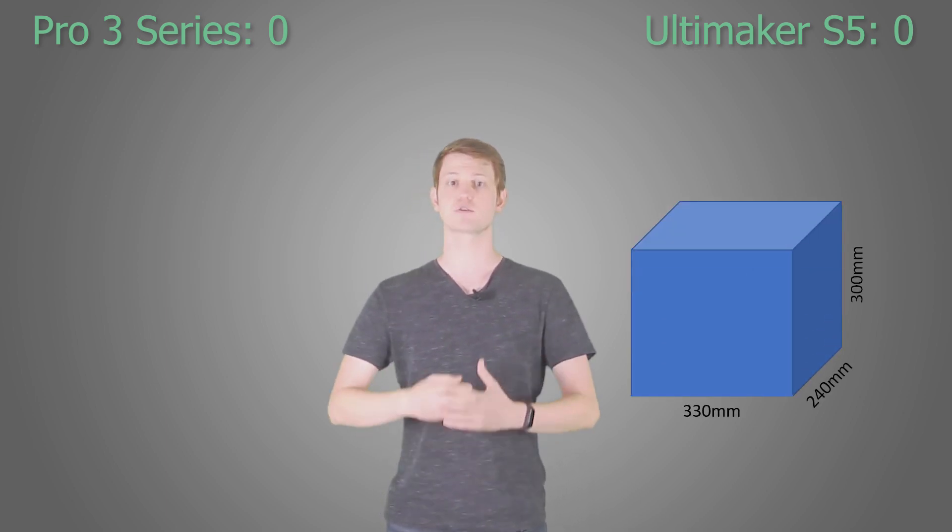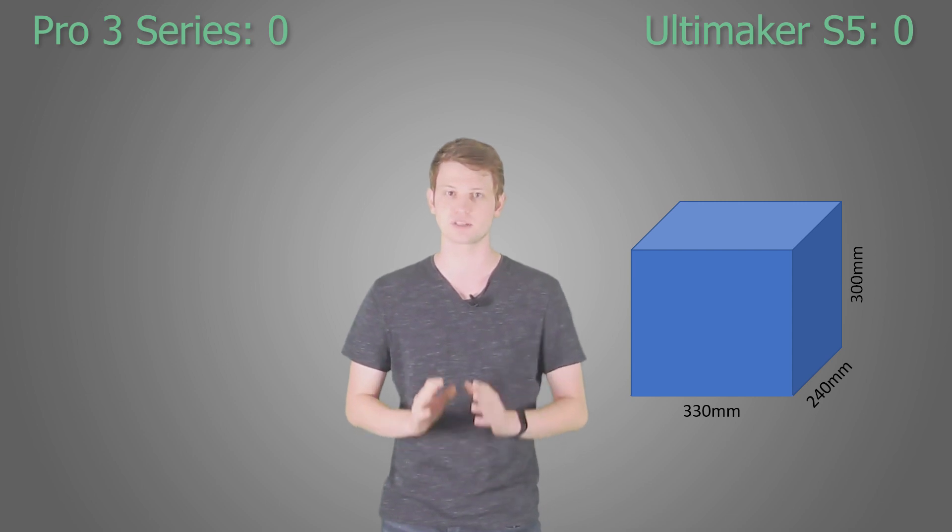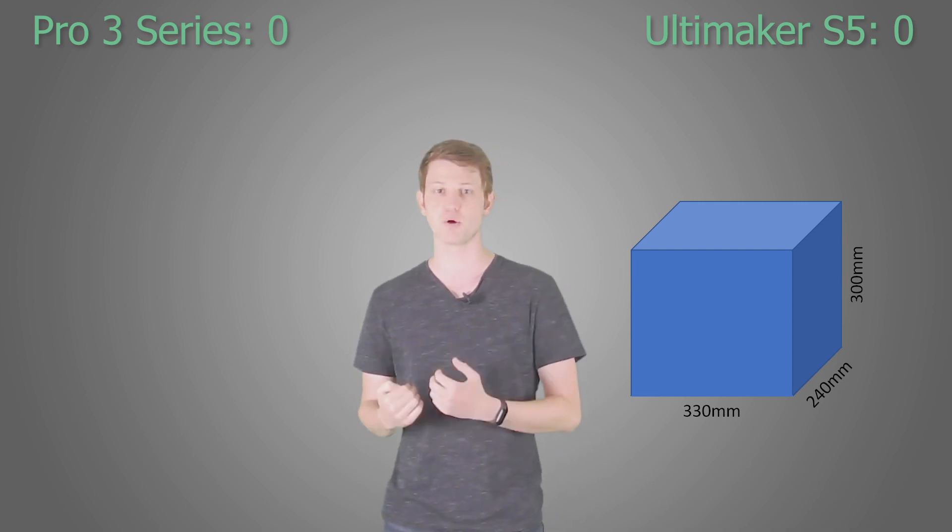The first thing many people look at when deciding which new 3D printer they want to buy is the build area or build volume. So we'll start with that. The Ultimaker S5 has a build volume of 33 x 24 x 30 centimeters, for a total volume of 23.7 liters. As far as I can tell, this applies to both single and dual extrusion modes.